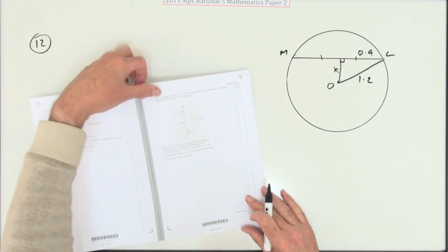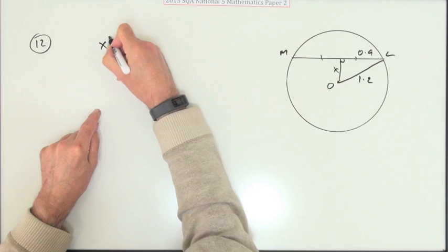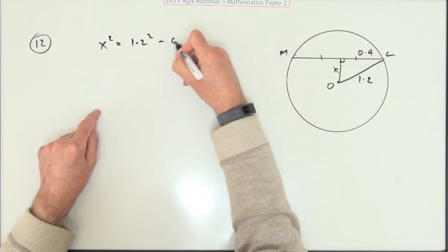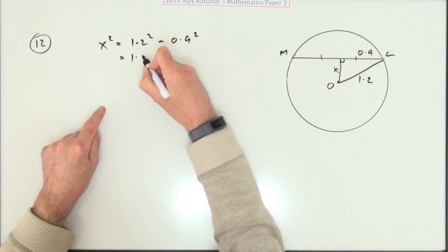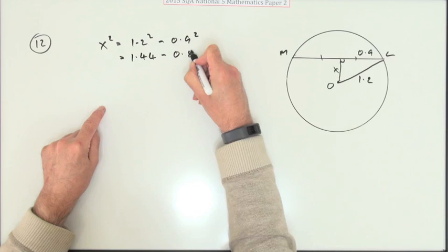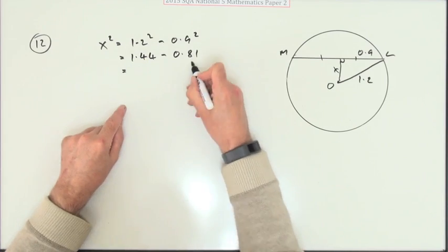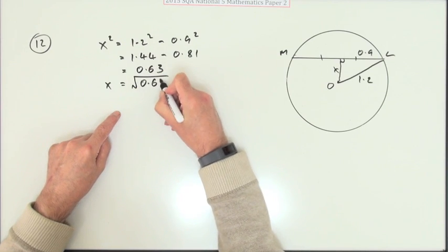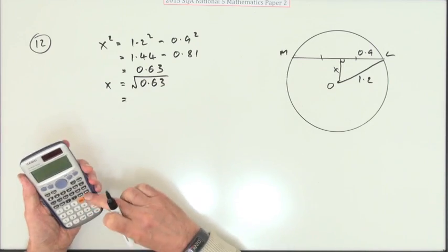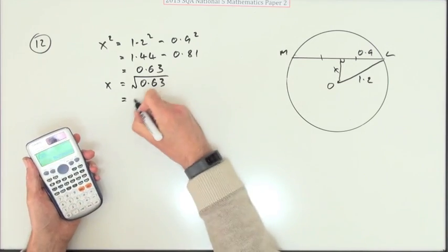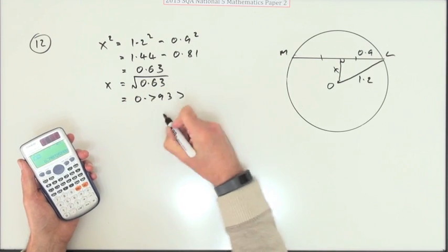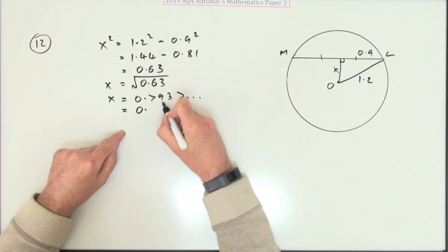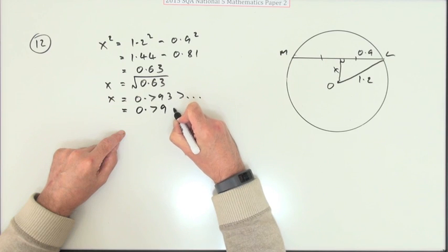Obviously the first thing I'm going to do is work out that side. I'm going to call it x, and that's Pythagoras. So I've got x squared will be 1.2 squared, but that's the biggest, so it'll have to be minus the 0.9 squared. That's 1.44 and that's 0.81, so subtracting them gives you 0.63, which means x itself will be the square root of 0.63. That's 0.7937 and so on, so I'll just take it to two figures - that's 0.79 meters.